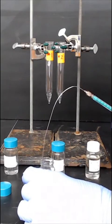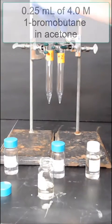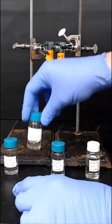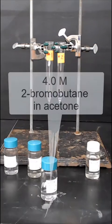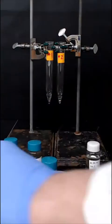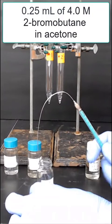Now we're going to start dispensing reagents into reaction number two. First, we'll add 0.25 milliliters of four-molar, one-bromobutane. The next reagent that we'll add is four-molar, two-bromobutane in acetone. We'll use 0.25 milliliters of this solution and add it to reaction number two.